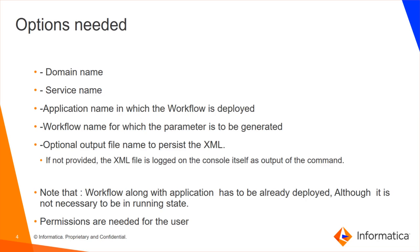Before you run this command, you need to have the domain name, service name, username, and password ready. You also need the application name — the application in which the workflow is deployed — and the workflow name, which is the actual workflow for which you are creating a parameter file. You can also use an optional output file parameter with the -o flag, which creates an XML file. If you do not provide this option, the parameter file is printed to the screen.